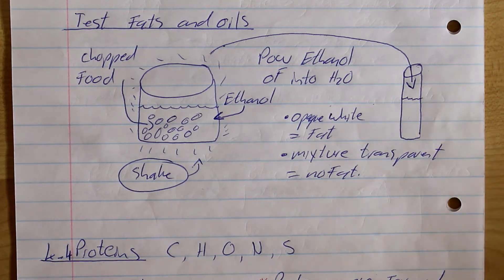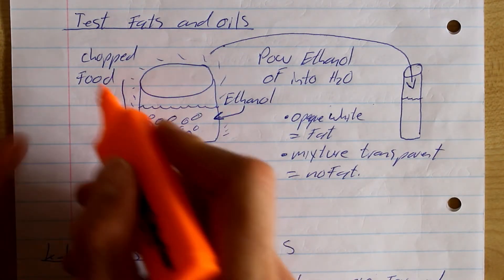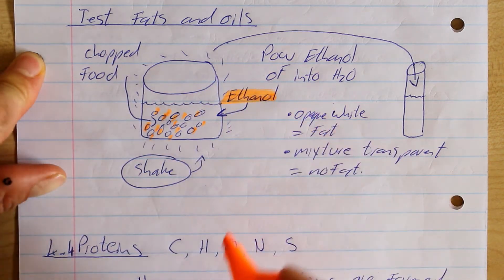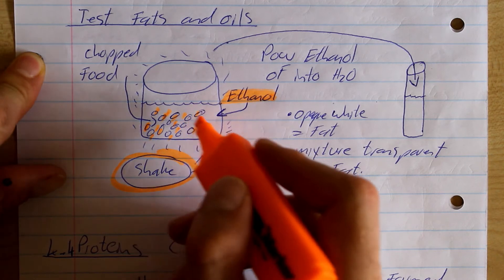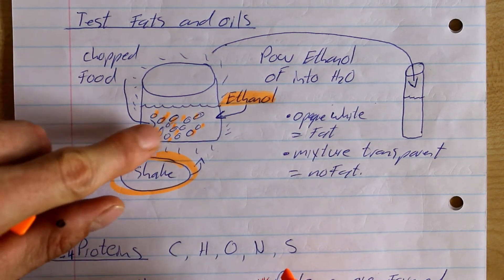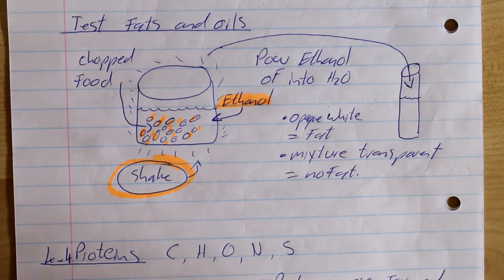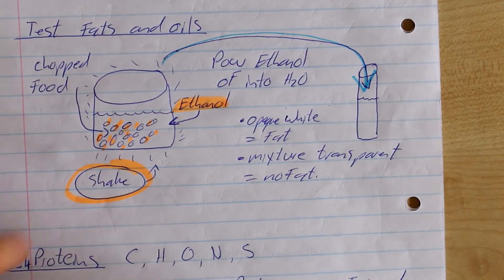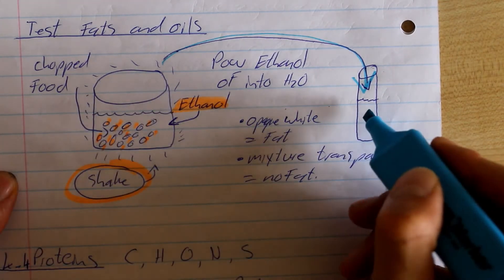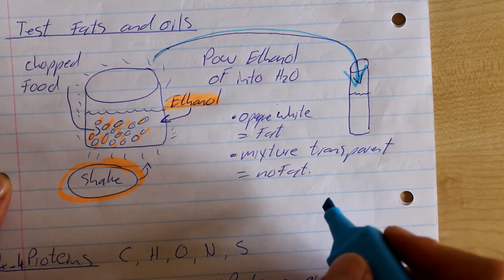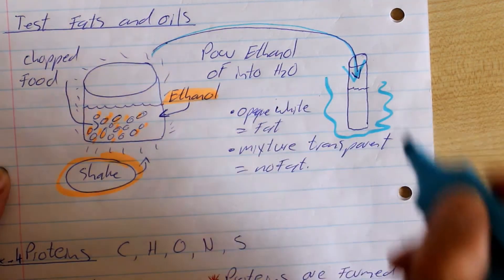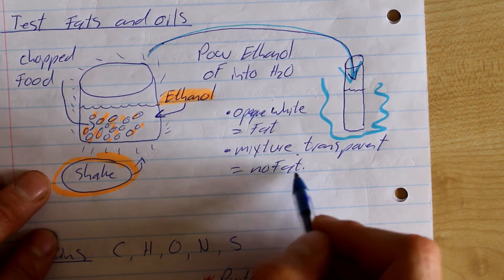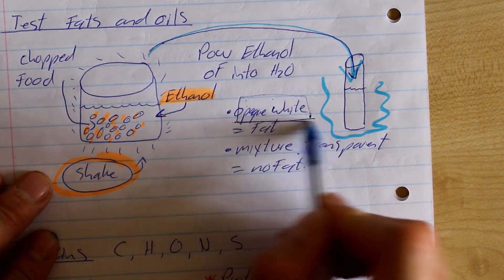How do we test for fats and oils? We take chopped food particles and place them in a beaker with ethanol. We shake the beaker, which allows the ethanol to dissolve the lipids from the food into the solution. We then strain the food out and pour the ethanol into a test tube full of water. After shaking this ethanol-water mixture, it will remain transparent if there is no fat present, and it will turn opaque white if fat is present.